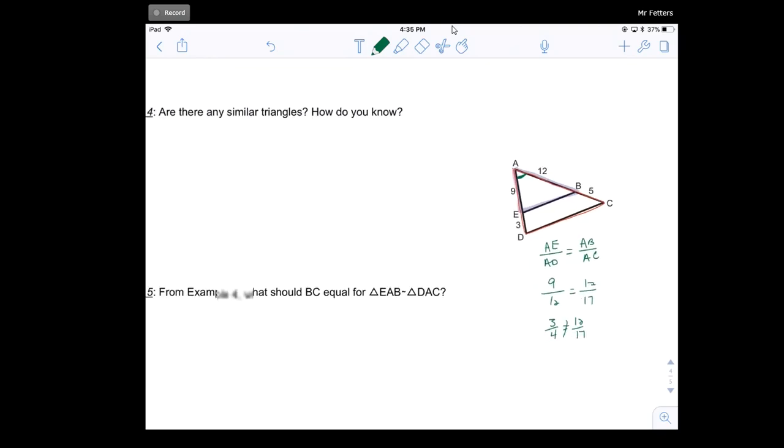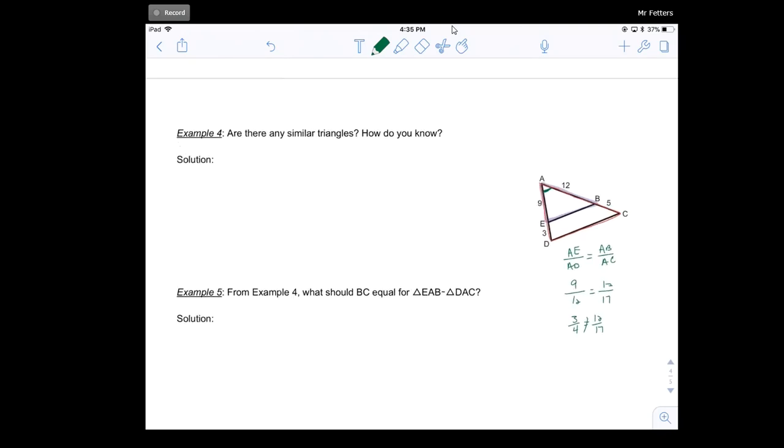So then, are there any similar triangles? No, there are no similar triangles. And how do I know? Because the sides are not in proportion, even though the included angle is congruent. The sides are not in proportion.